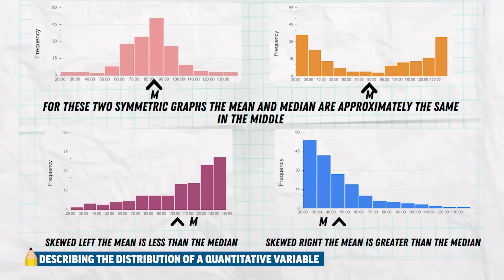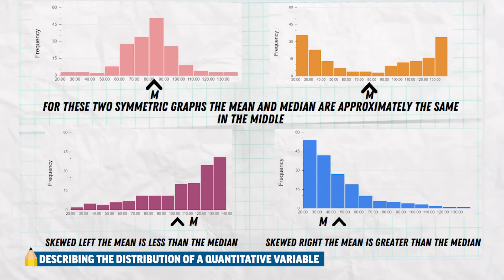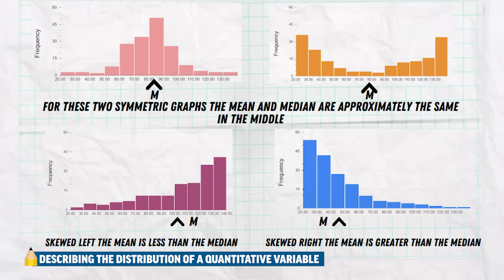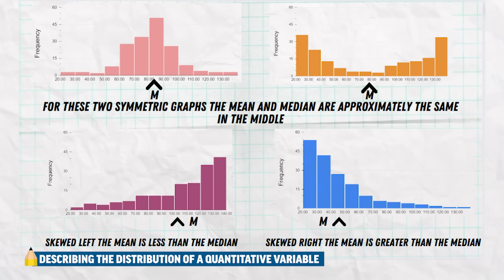We can see this clearly in graphs: the top two symmetric graphs have the mean and median at about the same place. The official symbol for the mean of a sample is x-bar — X with a little bar over top of it. When data is skewed to the left like the purple graph, the mean (the arrow) is going to be a little bit less than the median. When skewed to the right like in blue, the mean is going to be a little bit greater than the median. This is because in a right-skewed distribution, those higher values weigh more — they pull the mean upward even though there are only a few of them.